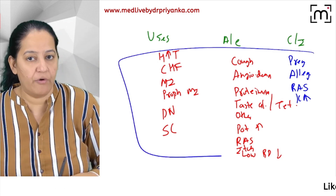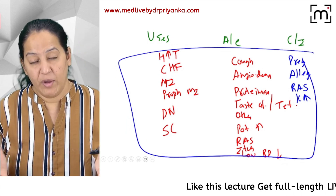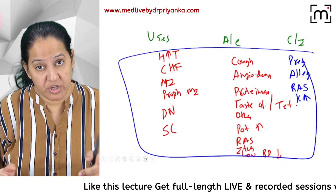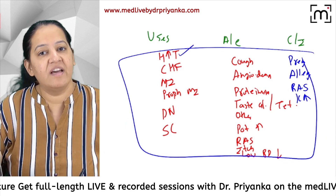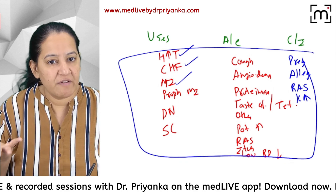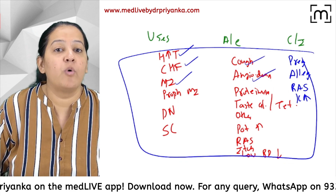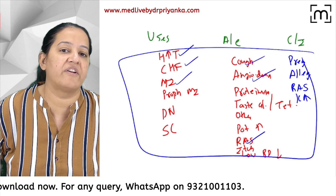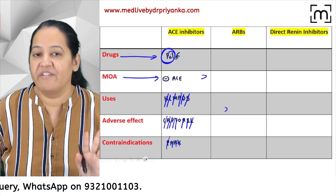You should know the reason for each of these. Think about how many short or one-liner questions can be created: Why are ACE inhibitors given in hypertension? In congestive heart failure? In MI? Why do they cause cough, angioedema, hyperkalemia? Why are they contraindicated in renal artery stenosis? You should know the reason for each — this is the proper way to study.